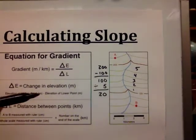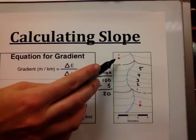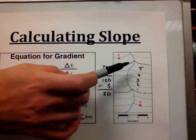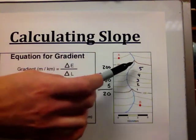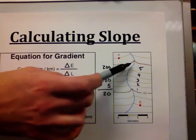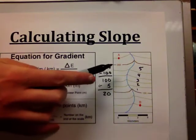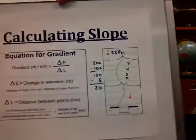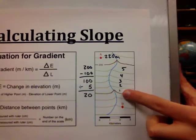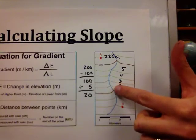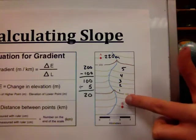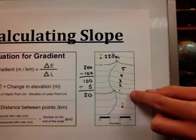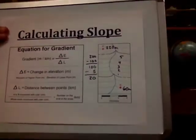Now let's find delta E, the change in elevation. We need the elevation of points A and B. The V-shape on the index contour lines points uphill, so elevation increases going north. The index contour line is 200 and the interval is 20, so point A is one line above 200, making it 220 meters. For point B, the V again points uphill, but we are two lines below 100 — that's 100 minus 20 minus 20 — giving point B an elevation of 60 meters.